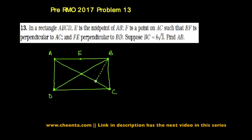And this point is F. So it's given that AE is equal to BE, it's given that BF is perpendicular to AC, and it's also given that if you join EF, then